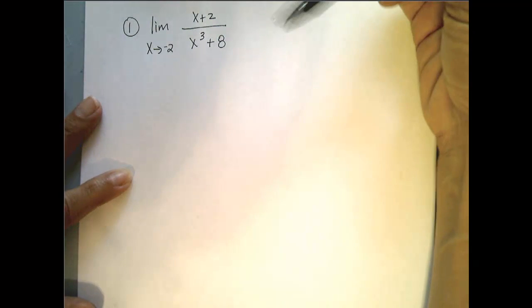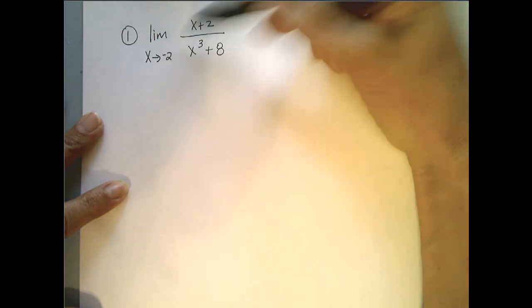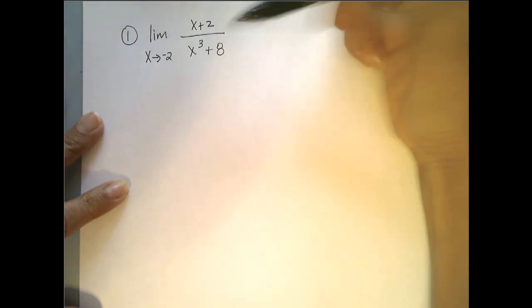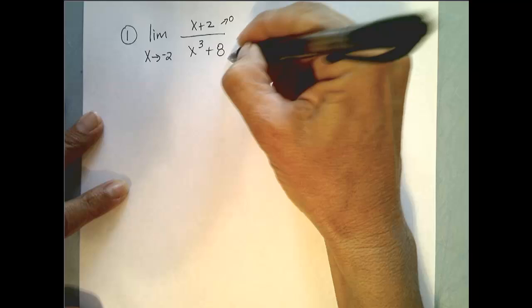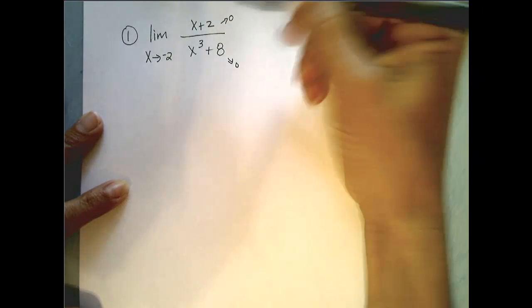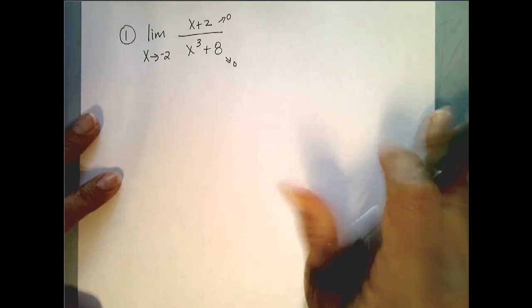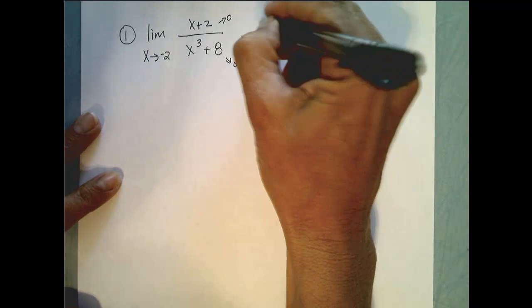So when we're given a limit, it's always good to first check to see if you can do direct substitution. But if you notice, if you plug negative 2 in for x in both top and bottom, both go towards 0. And since 0 over 0 doesn't tell us anything, we know we have to do more work.